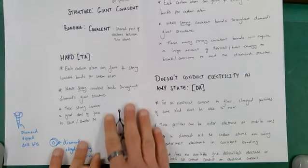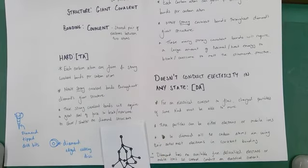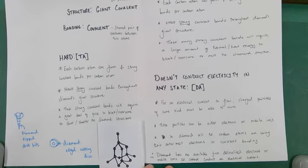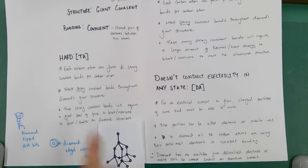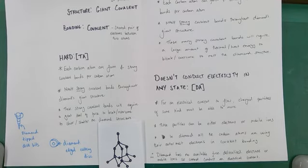For you triple awarders out there, why is diamond so hard? The answer here is pretty similar to the reason why diamond has a high melting point. Again, focus on the bonding inside the giant structure. Each carbon atom is able to form four strong covalent bonds per carbon atom. And there are therefore many millions of strong covalent bonds throughout the diamond giant structure.